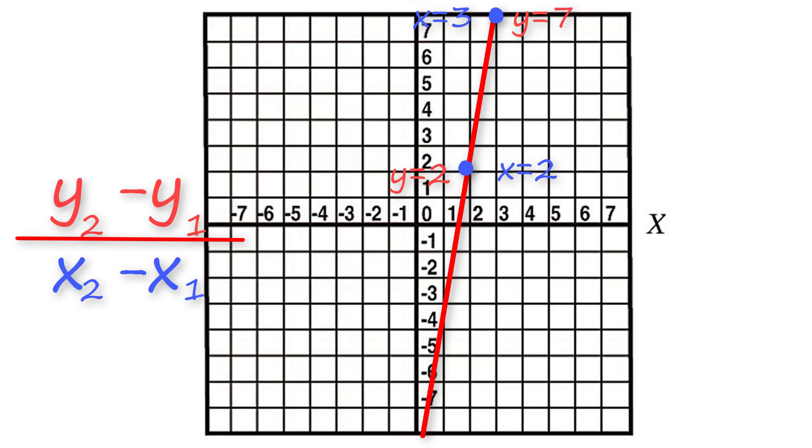Okay, now let's go over it. y₂ minus y₁ equals 7 minus 2, which is 5. x₂ minus x₁ is 3 minus 2, which equals 1. 5 divided by 1 is 5, so the slope of this line is 5.